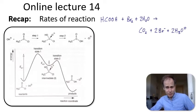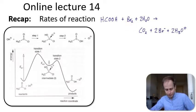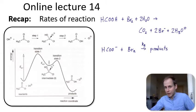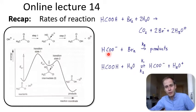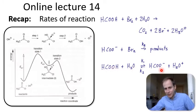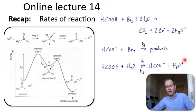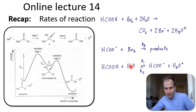Another example was the oxidation of methanoic acid with bromine, and we found that this is a reaction that proceeds stepwise. The oxidation involves not the protonated methanoic acid but the deprotonated methanoic acid reacting with bromine. For this to occur, first the methanoic acid needs to be deprotonated to form the conjugate base, and only this one then reacts in a second step to form the products. We were able to obtain a rate equation for this process by looking at these individual steps.